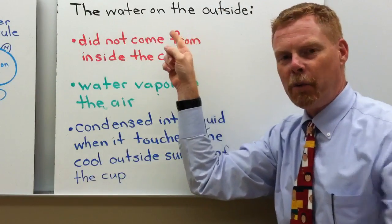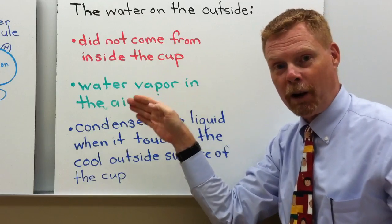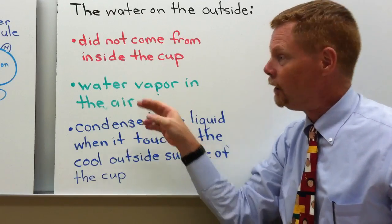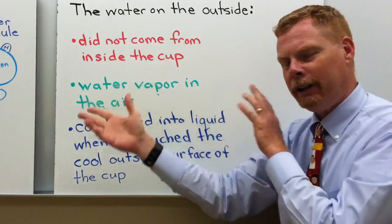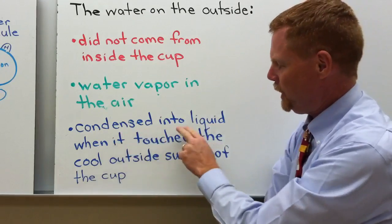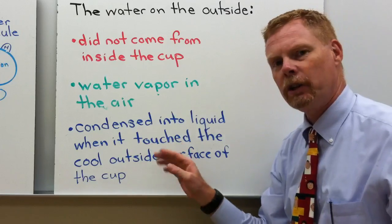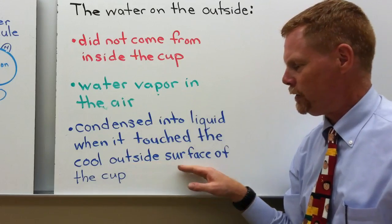The water on the outside of the water bottle, the water on your mirror, the water on the lawn, the water on the car, did not come from inside the cup. It came from water vapor out in the air. That water vapor condensed into liquid when it touched the cold outside surface of the cup.